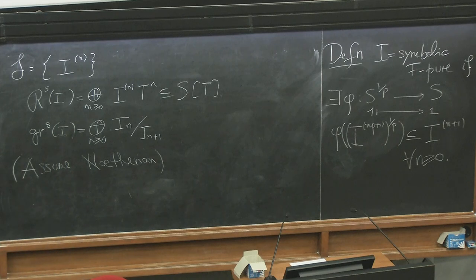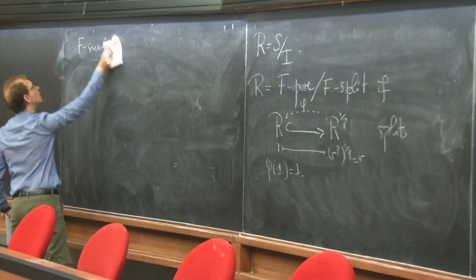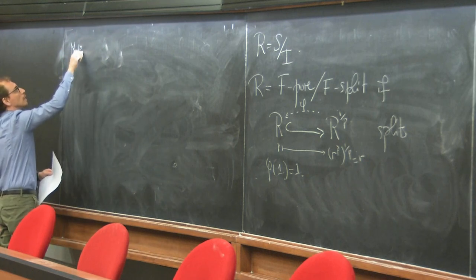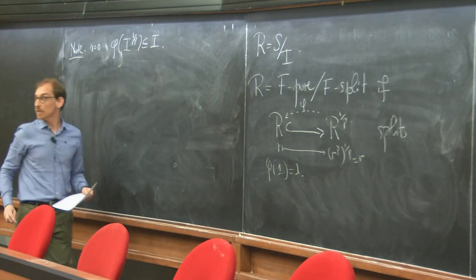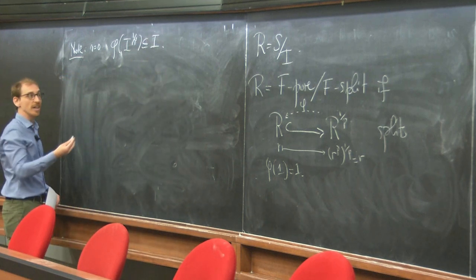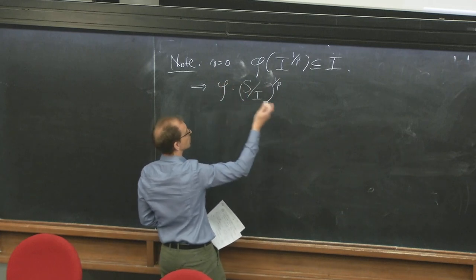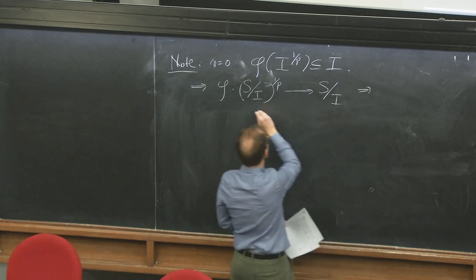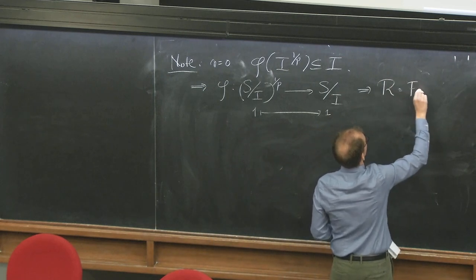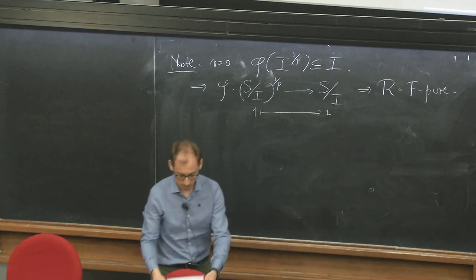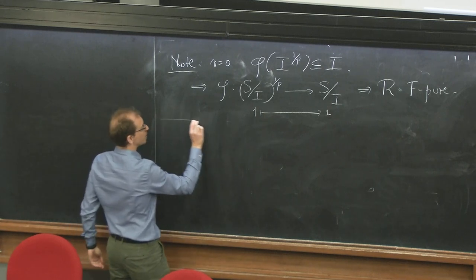Let me point out the first immediate consequence. If you set n equal to zero, you immediately get a splitting of R. So phi induces a map still sending one to one, which means in particular the quotient R = S/I has to be F-pure. But more happens, because you have this condition for every n.